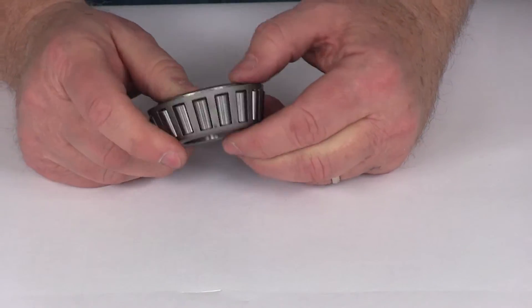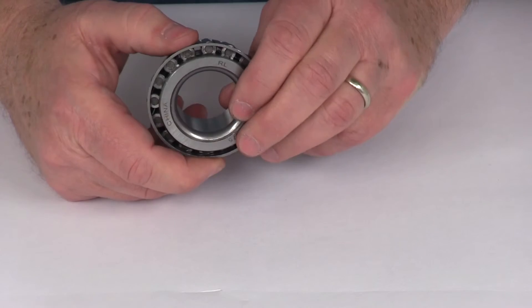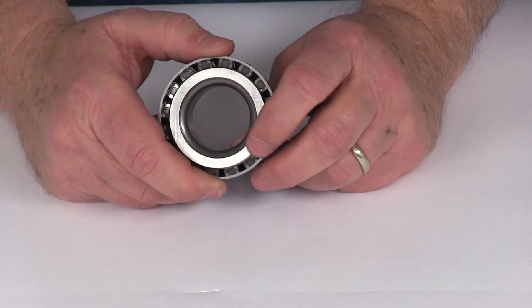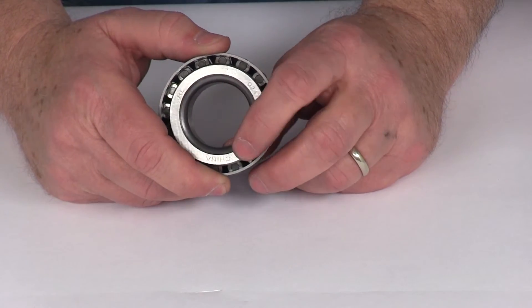The application on this bearing is the outer bearing for hubs 8-231-8, 8-218-9, and 8-187-7 hubs.